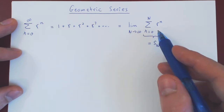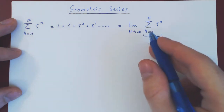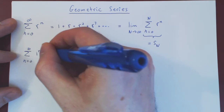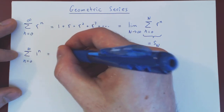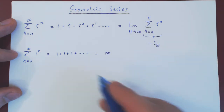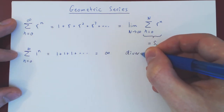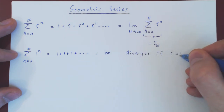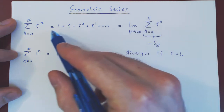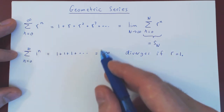Second comment: what if r is 1? If r is 1, this series is trivial. If we are summing from 0 to infinity, 1 to the n — well, 1 to any power is always 1 — so this will be 1 plus 1 plus 1 forever. If you add 1 an infinite number of times, clearly the result is infinite. So the geometric series when r equals 1 clearly diverges.